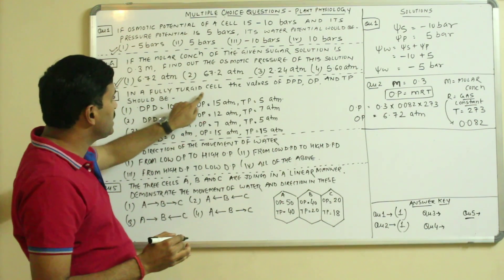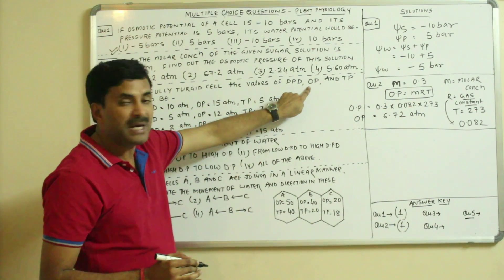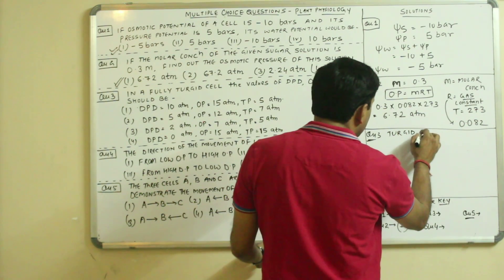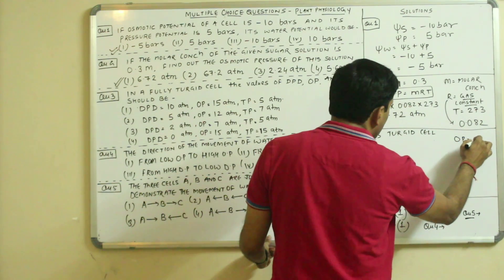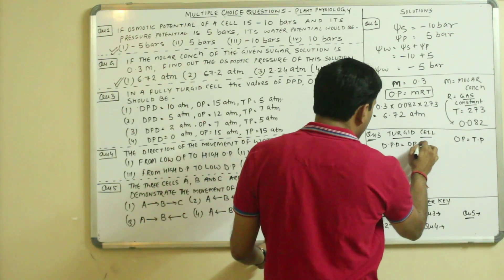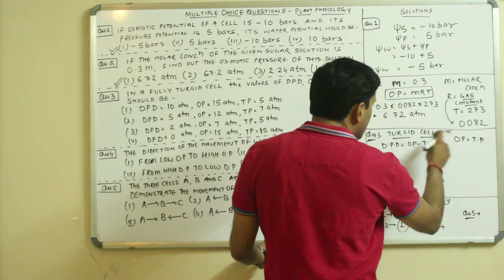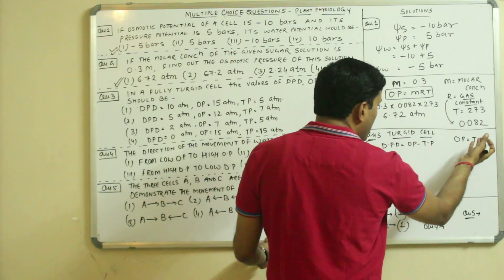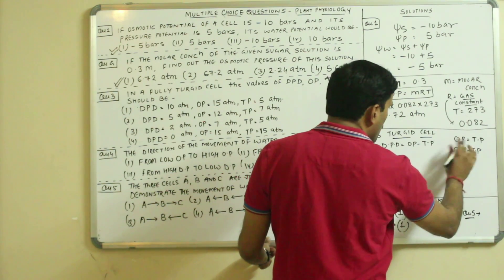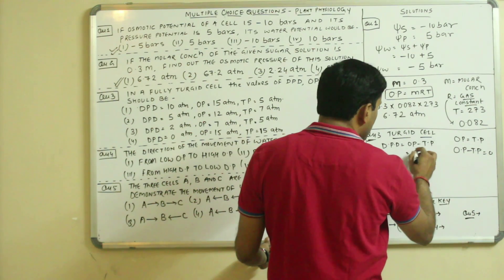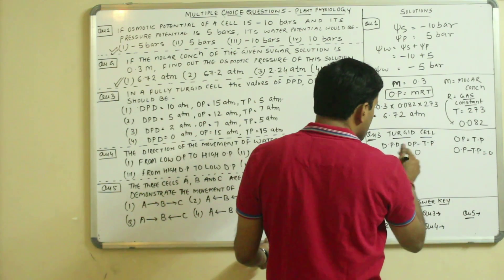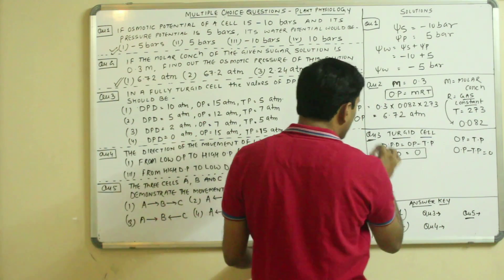Question 3: in a fully turgid cell, what are the values of DPD, OP, and TP? Always remember that in a turgid cell, OP = TP. Since DPD = OP − TP, shifting TP to the left gives OP − TP = 0, so DPD = 0.